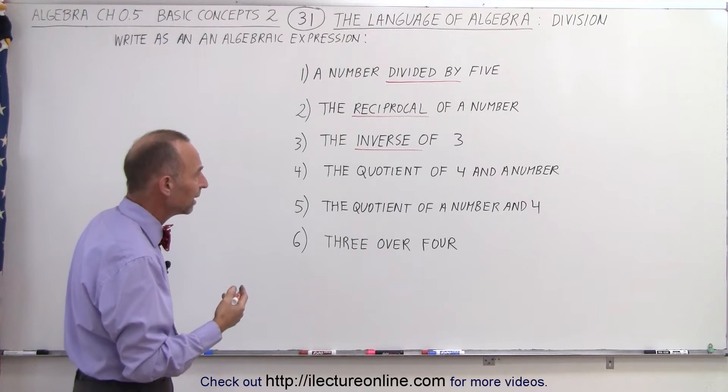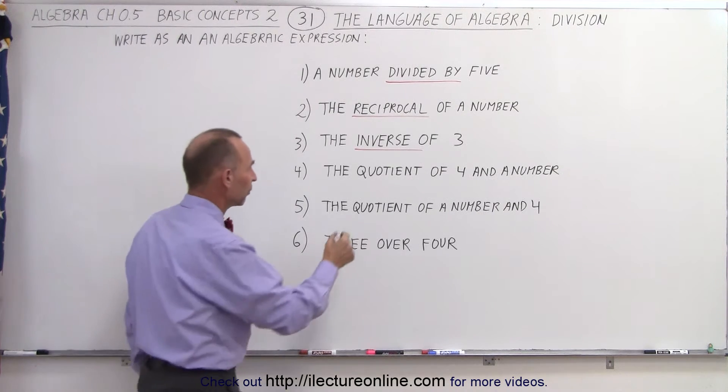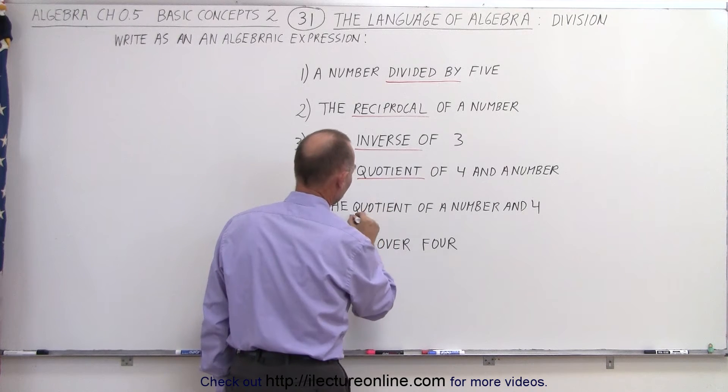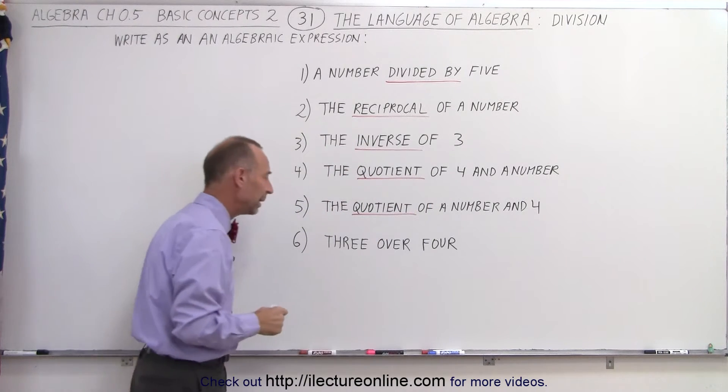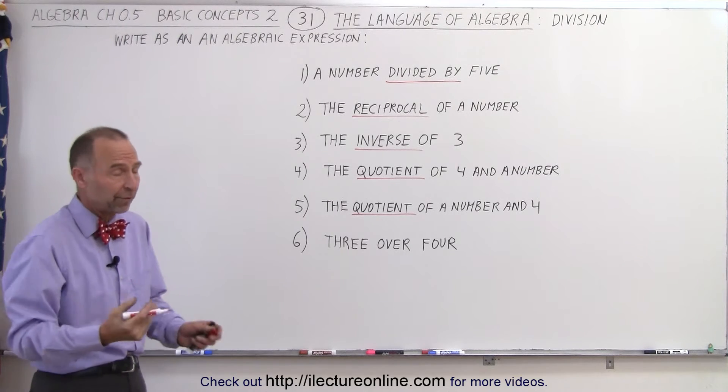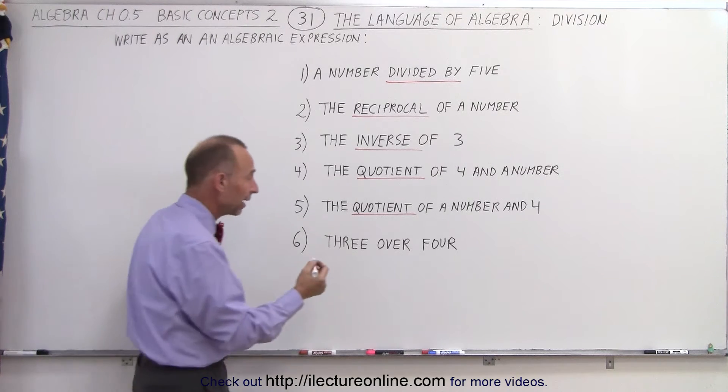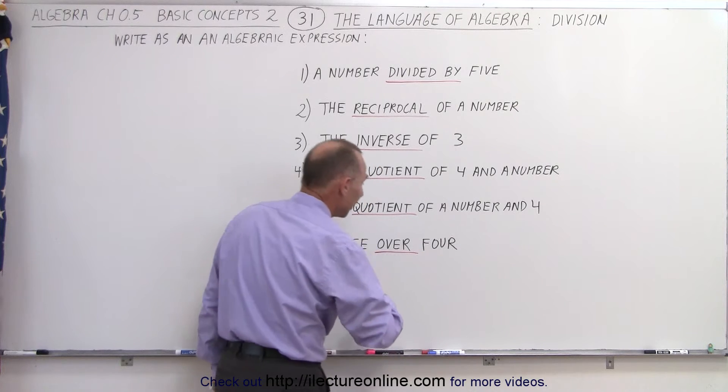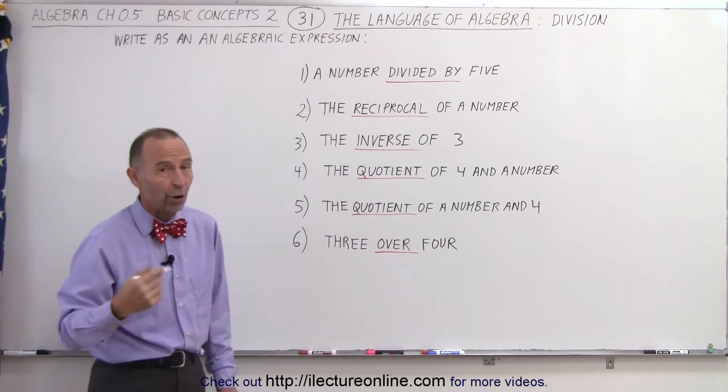The quotient is the result of a division. So when we see the word quotient, yes indeed, we're dealing with division. And we write 3 over 4, or 4 over 3, whatever it may be. That also implies that we can write it in a fraction, and fractions by default are divisions.